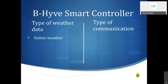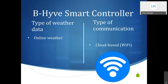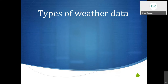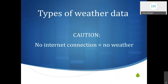It is cloud-based communication. One important note about this type of communication is that it's really handy, convenient, and easy to set up. However, caution: if you don't have internet connection, you don't have weather data. So if you are a seasonal resident and you leave every summer, you want to make sure that your Wi-Fi remains active all year long. Otherwise, the controller will not be able to water properly based on the weather without internet connection.